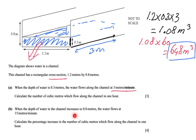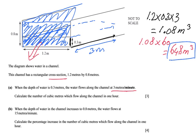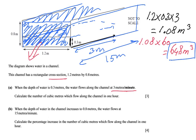When the depth of the water in the channel increased to 0.8 meters, the water flows at 15 meters per minute. So if we increase the amount of water, this is the new situation. It's full, all the way. Then per minute it's not 3 meters, but 15 meters which is leaving the channel per minute. The question is, calculate the percentage increase in the number of cubic meters which flows along the channel in one hour. And that's for four points, so some work is going to be involved.